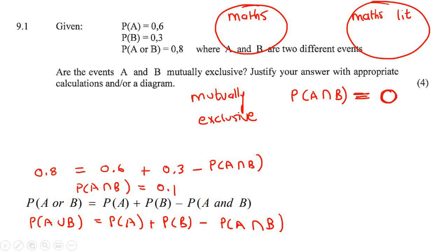So are these events mutually exclusive? No, events are not mutually exclusive. Why? Because P of A and B was not equal to 0.